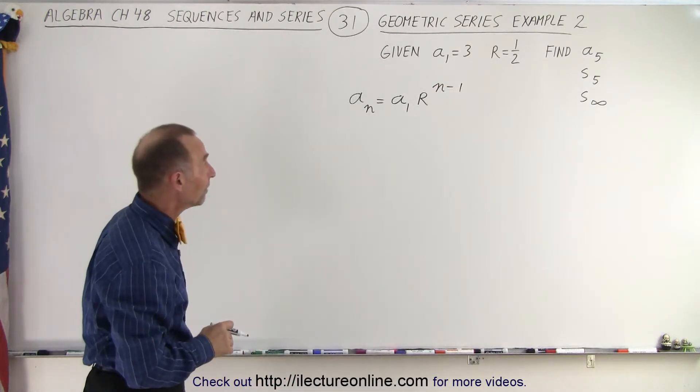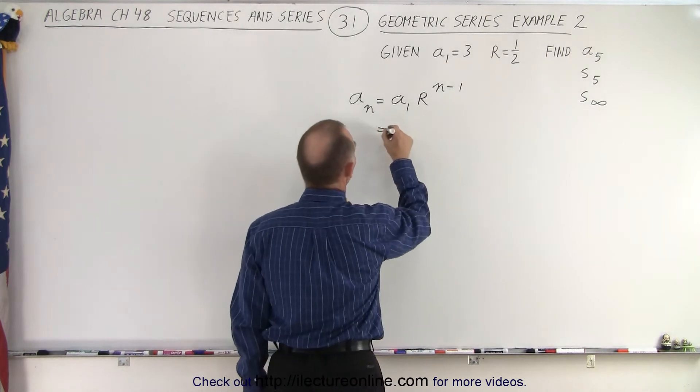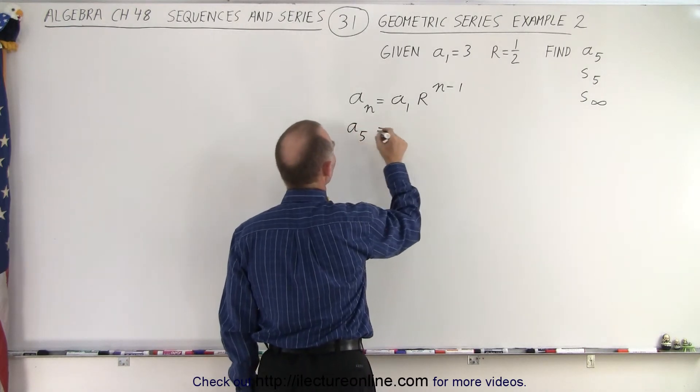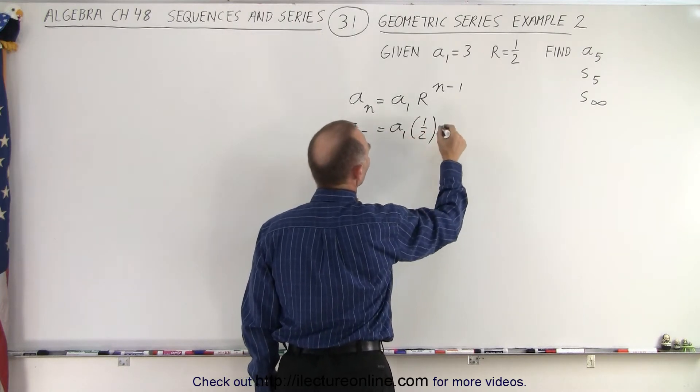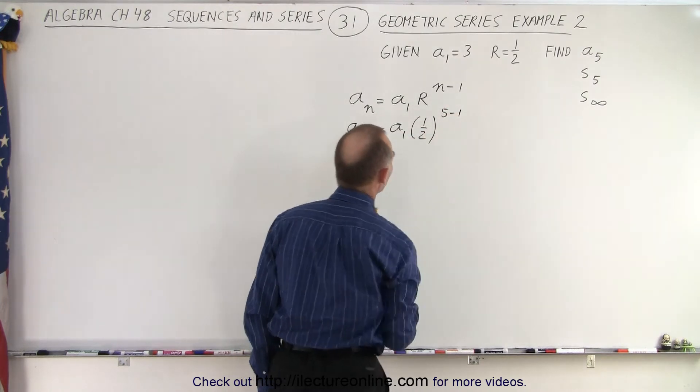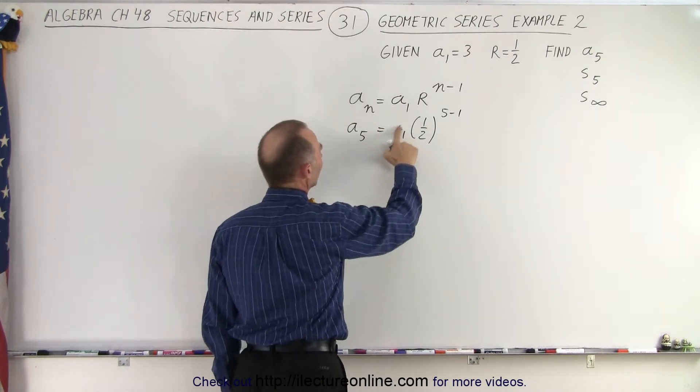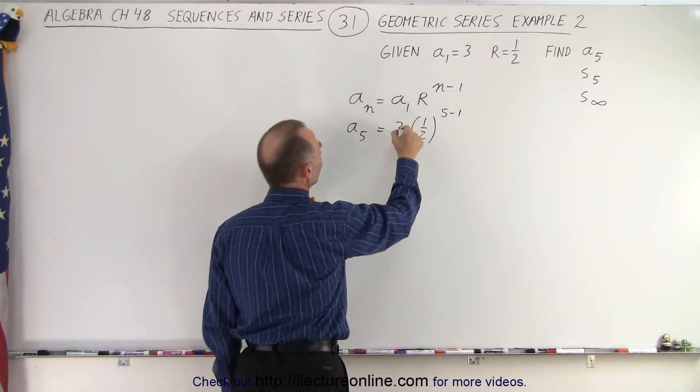Alright, let's plug in and see what we get. So in this case, we can say that a sub 5 is equal to a sub 1 times the common ratio, which is 1 half, raised to the 5 minus 1 power. And of course, a1 is the number that's given to us. That was equal to 3.